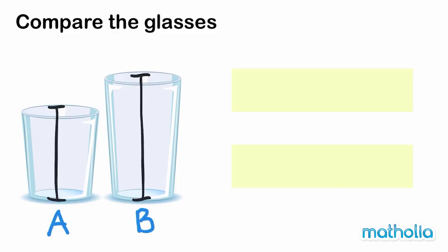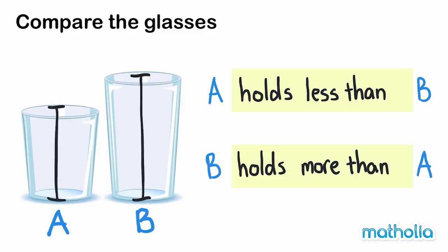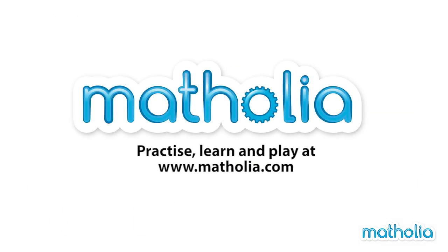We can put less water into glass A than glass B. We say that glass A holds less than glass B. We can pour more water into glass B than glass A. We say that glass B holds more than glass A.